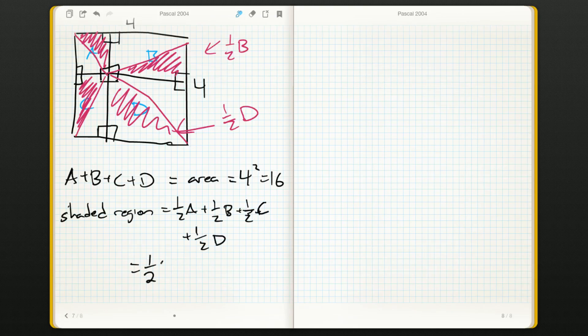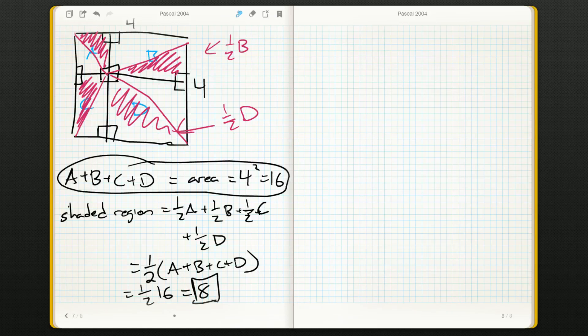But really, we just factor out a half here, and that's A plus B plus C plus D, and I already know what that is. It's 16. So the shaded region is just a half of 16, and that's 8.